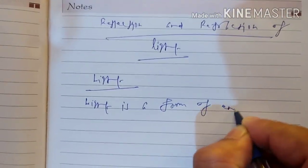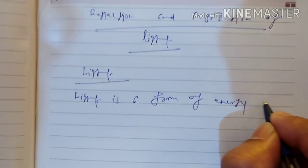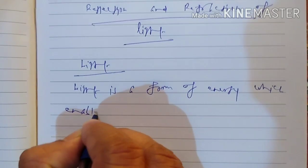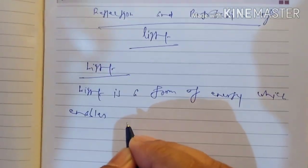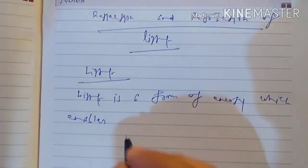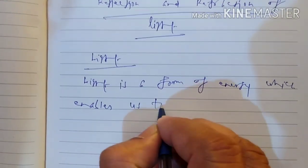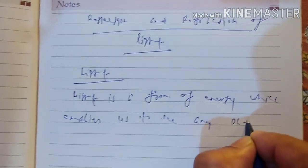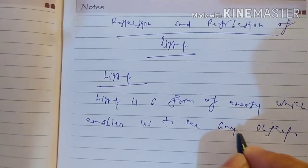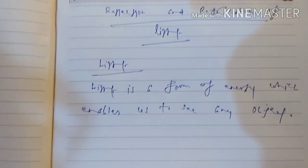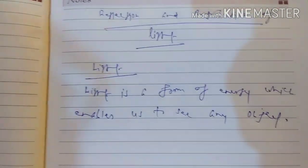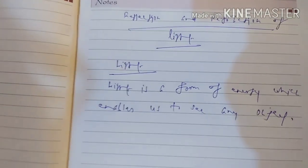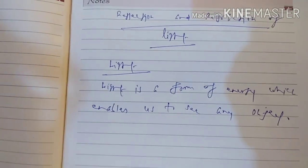Light is a form of energy which enables us — the word 'enables' means to make able — which enables us to see any object. From the very beginning of Class 6, we have studied different properties of light, and once again we shall try to recite them.